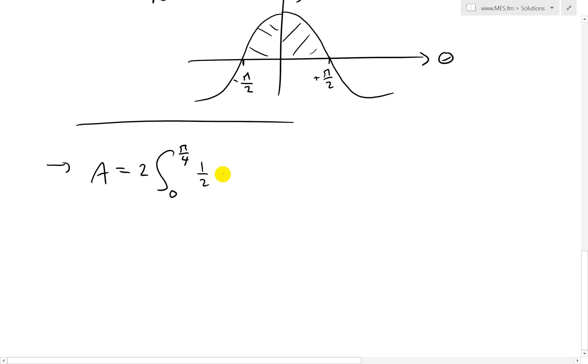So this means we have the 1 over 2, cosine squared 2 theta, d theta. So the 2's cancel. And this just equals - the 2's cancel. Integral from 0 to pi over 4, cosine squared 2 theta, and then d theta, like that.